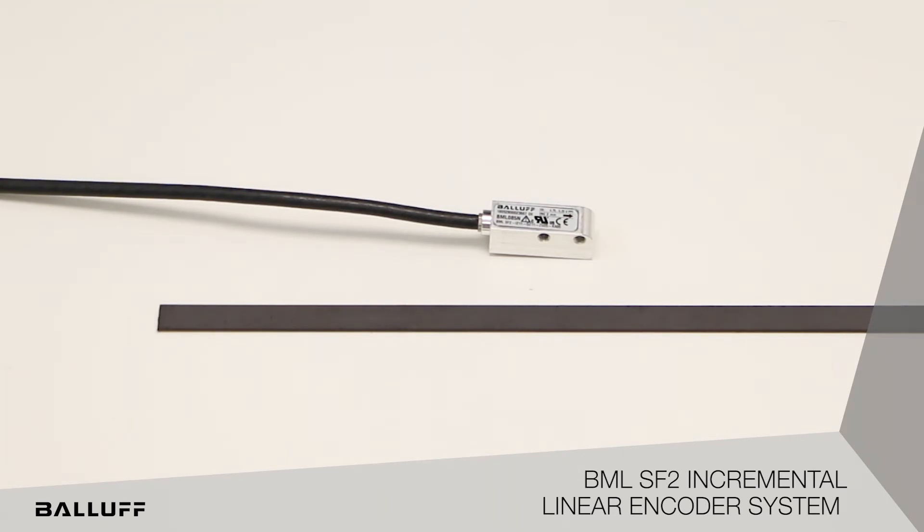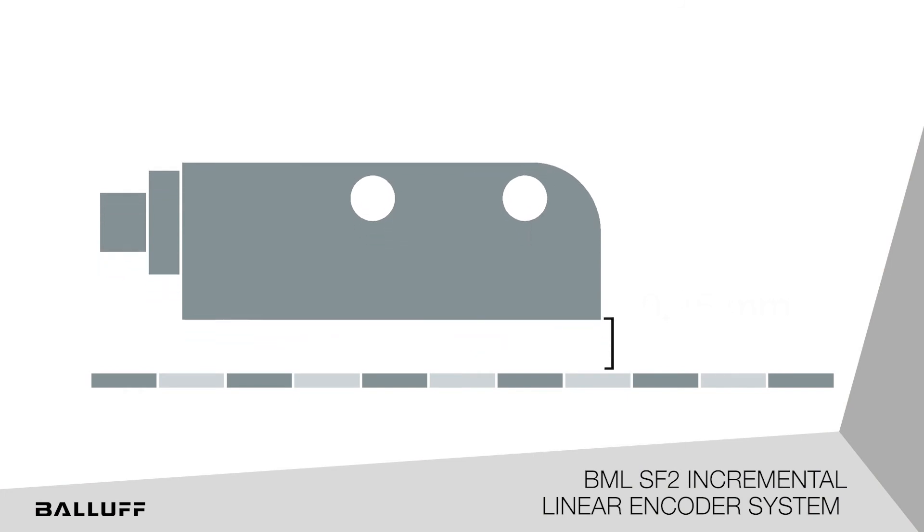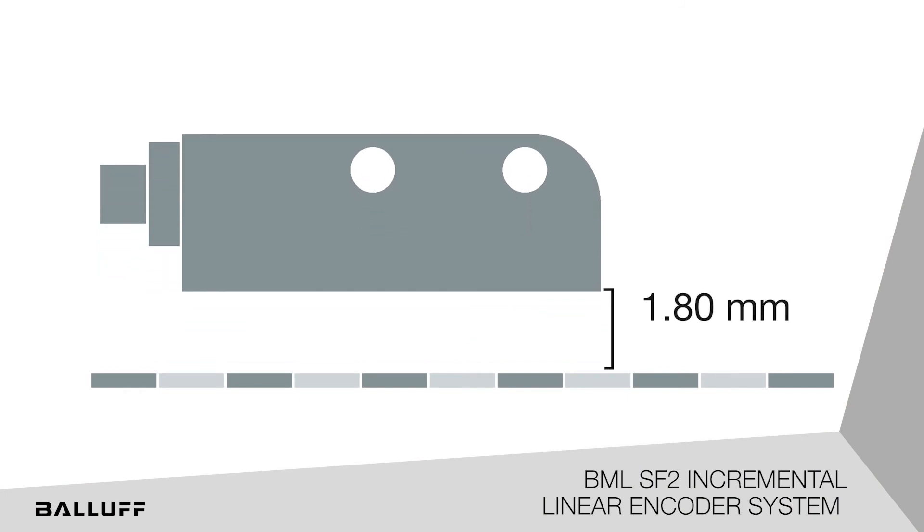The BML SF2 provides full operational assurance at industry-leading tape-to-sensor gap distances up to 1.8 millimeters. Full system accuracy of plus-minus 12 micrometers is guaranteed at gap distances up to 1 millimeter.